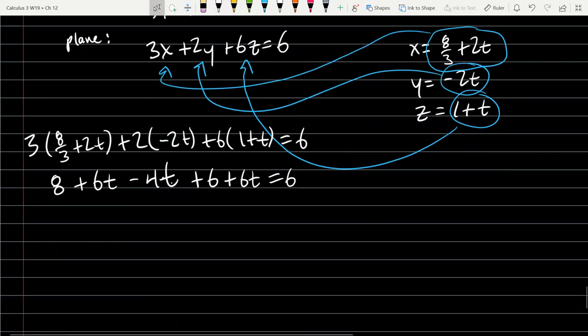From here, I'll subtract six on both sides. The only constant I've left is eight, bring that to the right side, negative eight. How many t's do we have? Six minus four is two, plus six is eight t. t equals negative one.